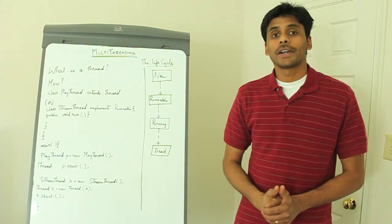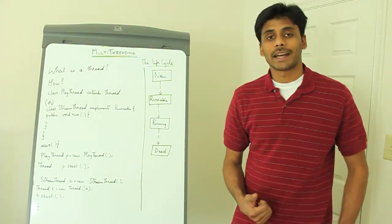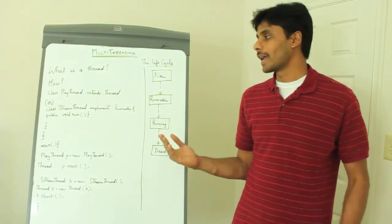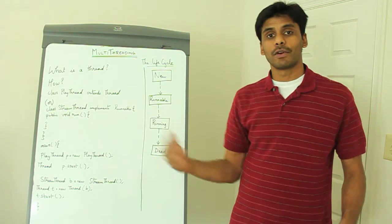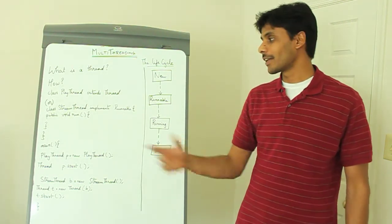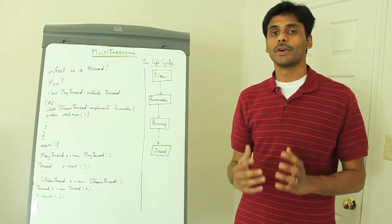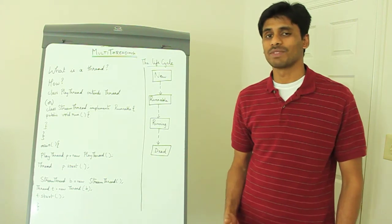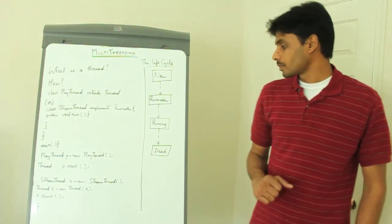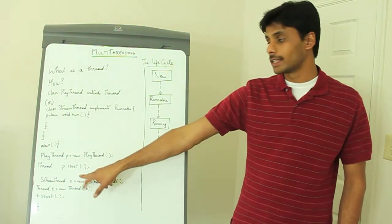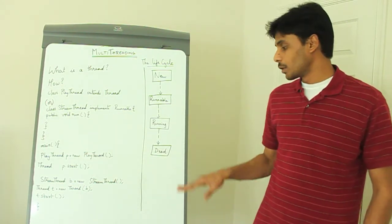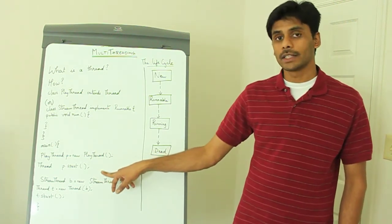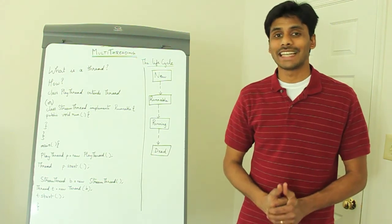There is no guarantee of the order in which the JVM scheduler will pick your threads. For example, in our YouTube scenario, the JVM can run the play thread for a bit so you watch the video, and then run the stream thread so the rest of the video is streamed. The order is really up to the thread scheduler that comes with the JVM. When the thread finishes its execution — when the run method finishes — the thread goes to the dead state. At this point, you cannot call the start method again on the thread; if you try, you will get an IllegalStateException.